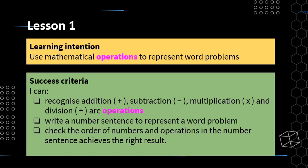The next success criteria is writing a number sentence to represent a word problem — putting a word problem into a number sentence. And lastly, checking the order of numbers and the order of operations in a number sentence achieves the right result. We'll have a look at that very shortly.